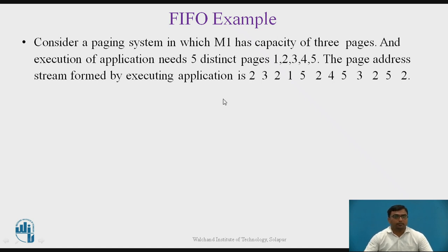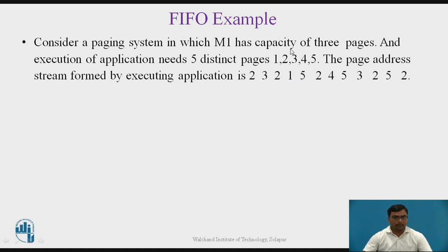For example, consider a paging system in which M1 has a capacity of three pages, and execution of the application needs five distinct pages: 1, 2, 3, 4, 5. The page address stream is formed by the executing application. Here M1 refers to the cache memory, which has three cache lines, and the executing application needs to access five distinct pages from main memory.